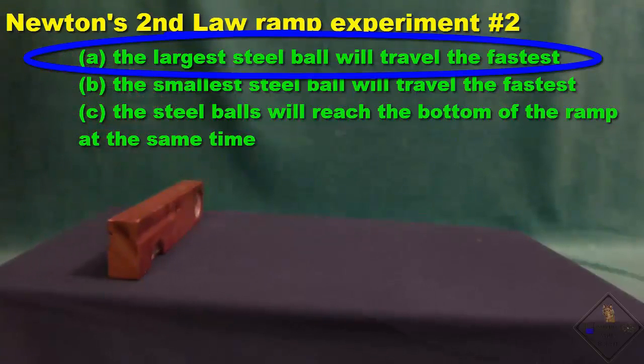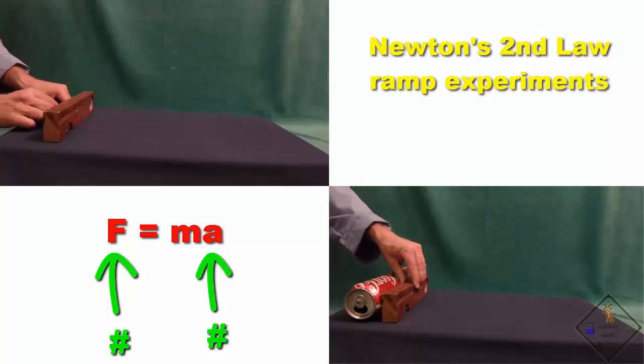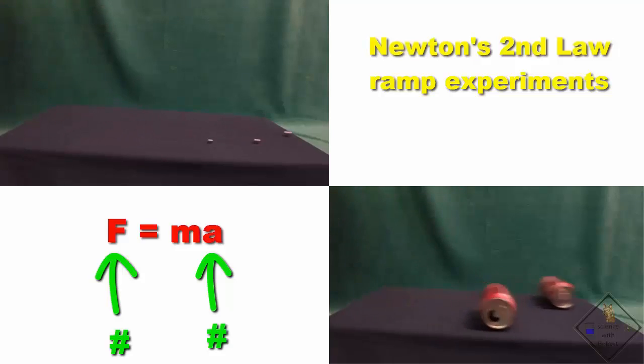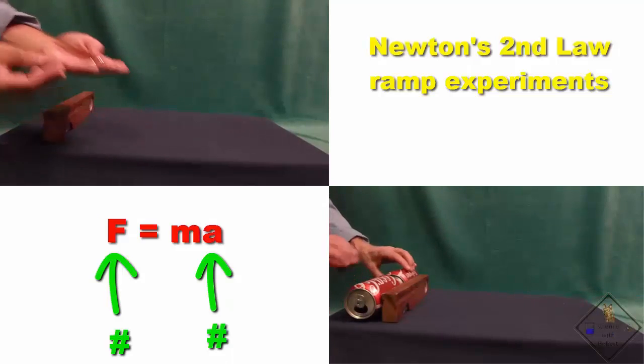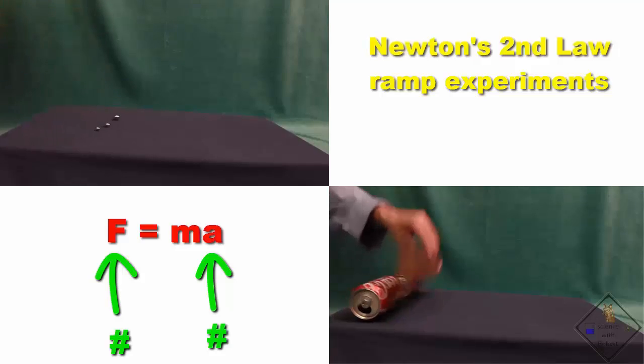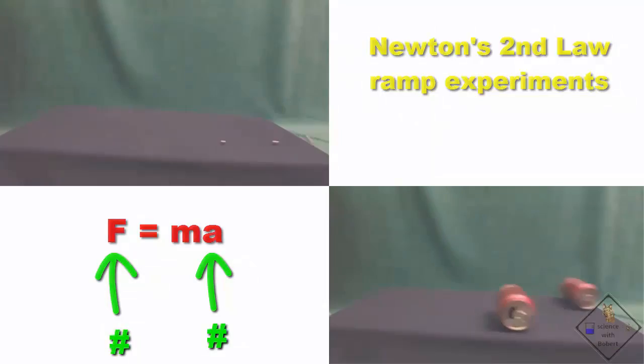We can see that acceleration is definitely present in these ramp experiments for all the objects rolled down the ramp. So that means with each object there is an unbalanced overall net force. Do you know what that force is? The force accelerating each object down the ramp is the object's weight. Weight is a force and that is why the heaviest soda can or the heaviest steel ball always won the race of rolling down the ramp.